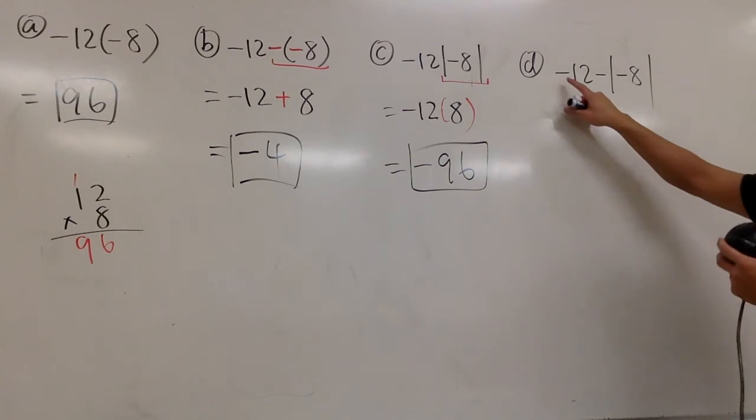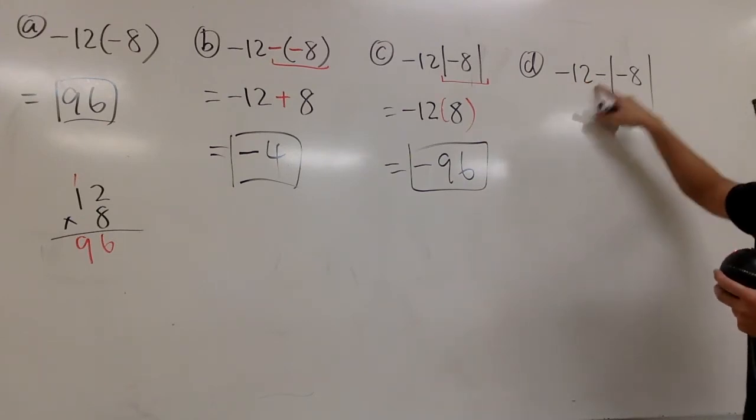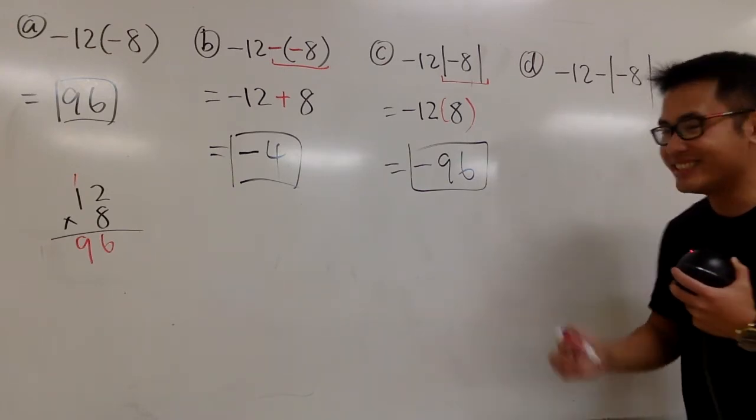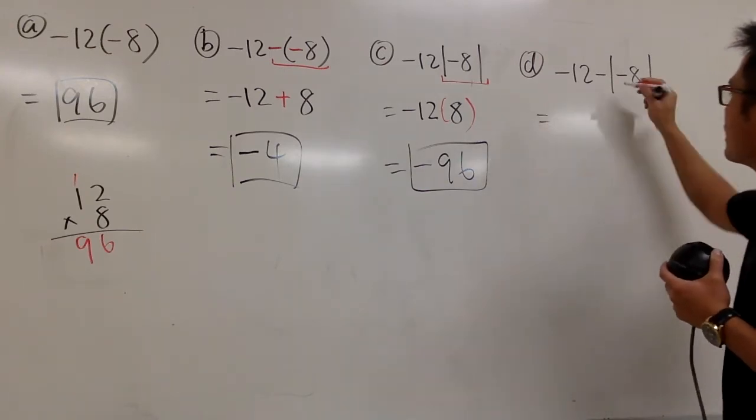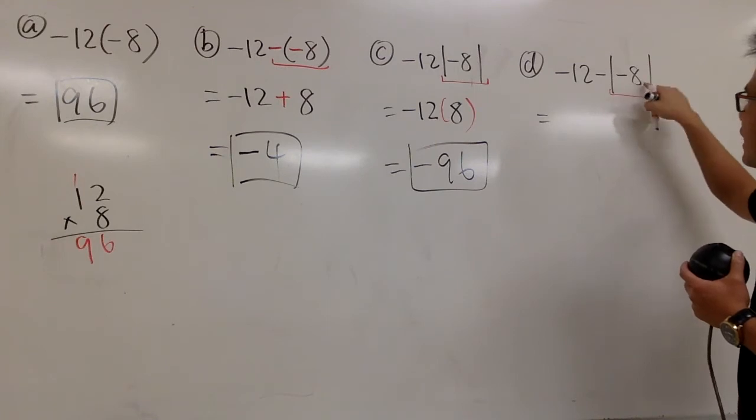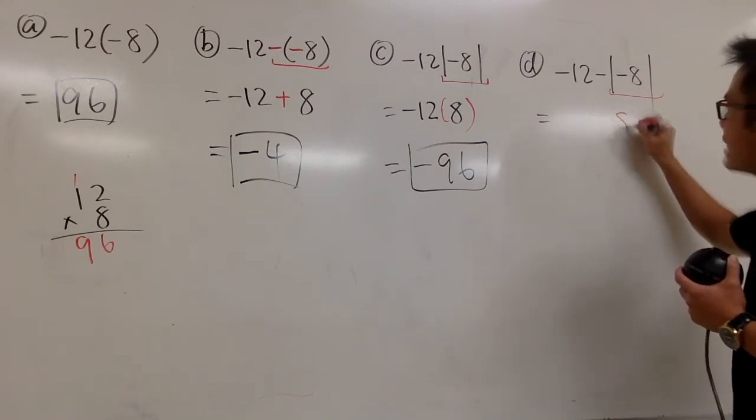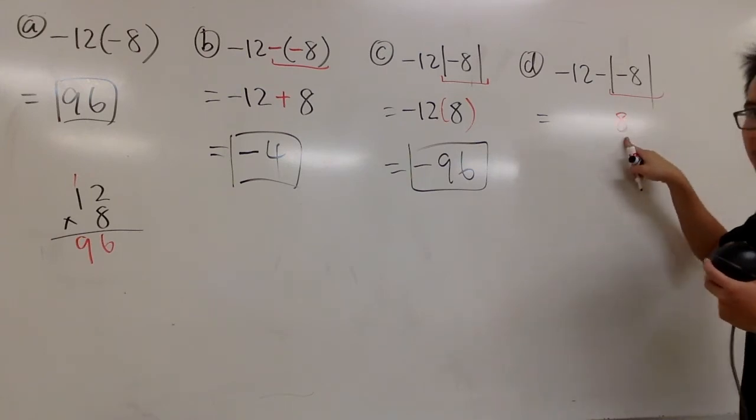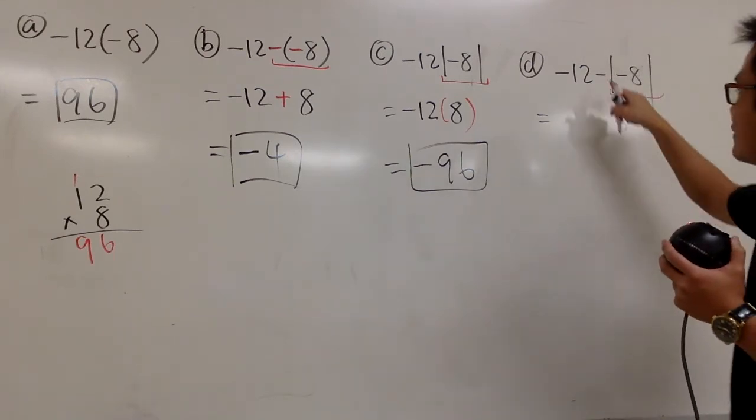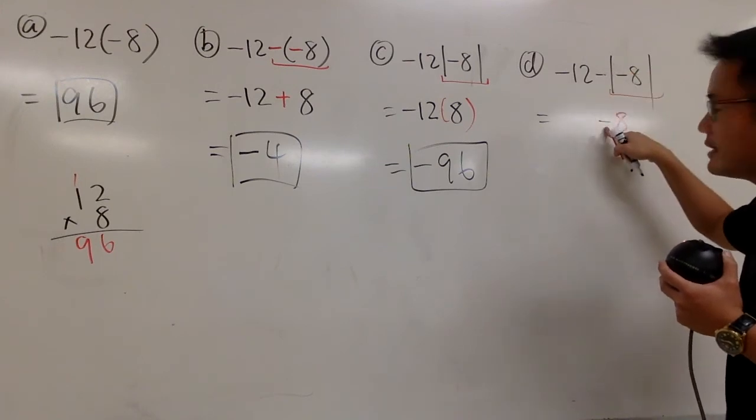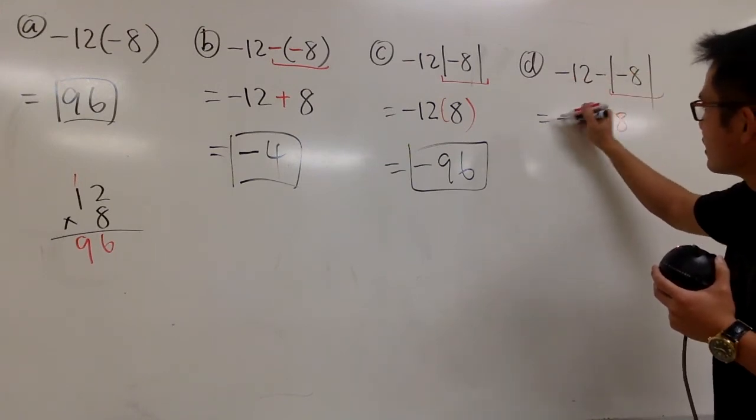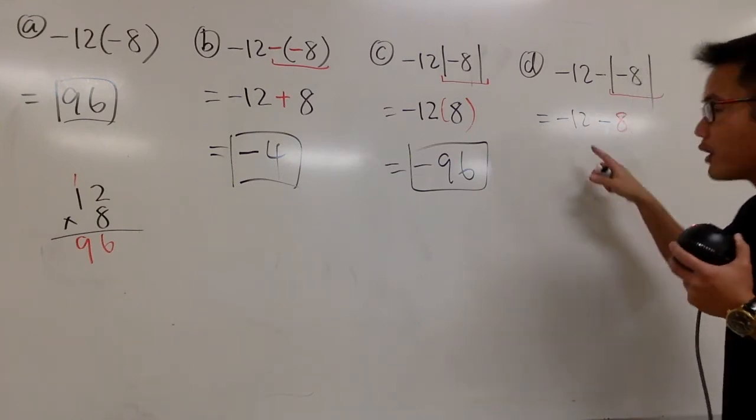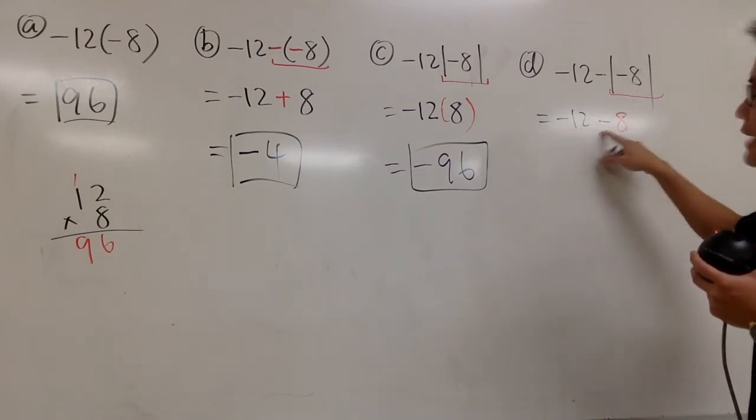Lastly, -12 minus absolute value of negative 8. Do the absolute value first, okay? Absolute value of negative 8 becomes a positive 8 only. However, we still have a minus in front, right? Let's also write down a -12 in front as well. So in this situation, we are doing -12-8.